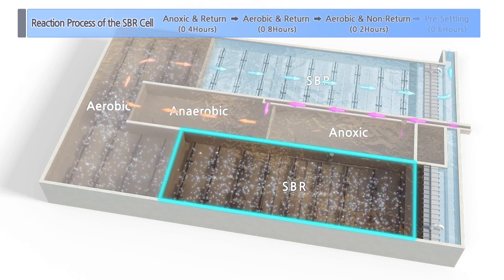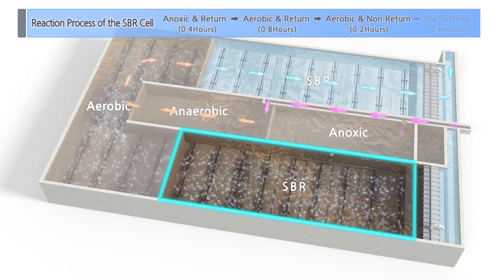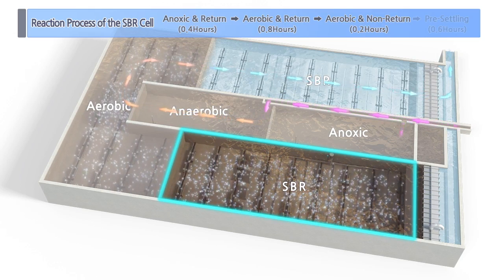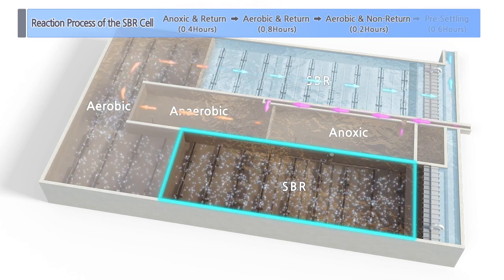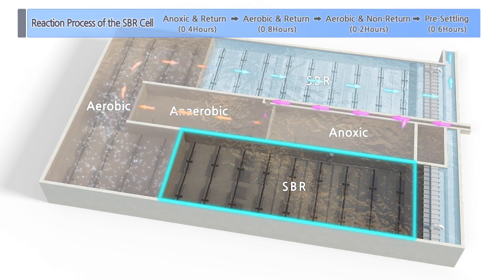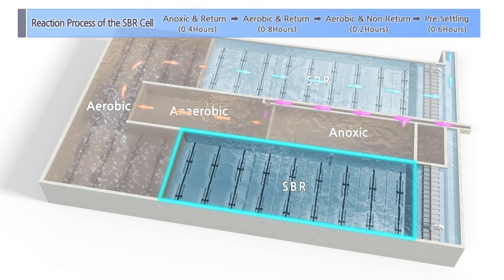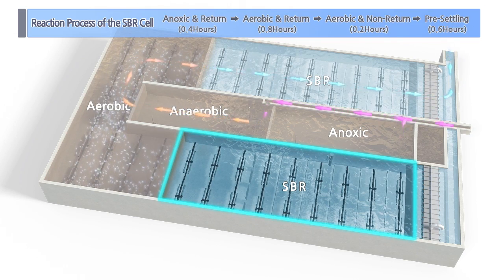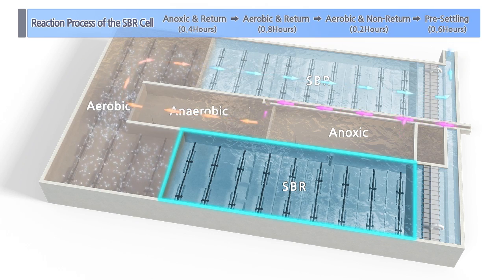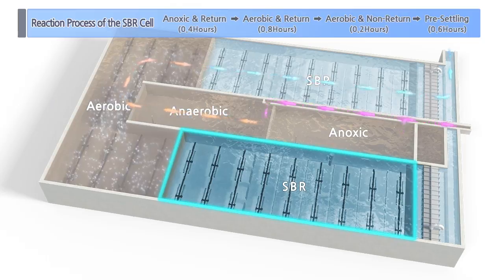Next, at the aerobic and non-return stage, the return process is stopped by closing the return valve and stopping the pump, while the aeration condition continues by supplying air continuously. After the aerobic and non-return stage, the next step is pre-settling, in which the solid-liquid separation occurs within a short period of time in a static settling state, where the SBR cell is in off mode.